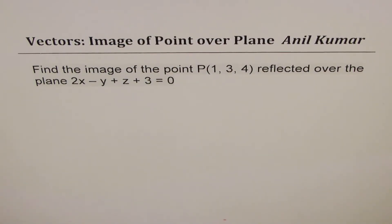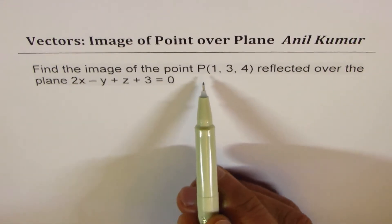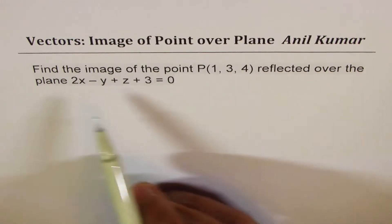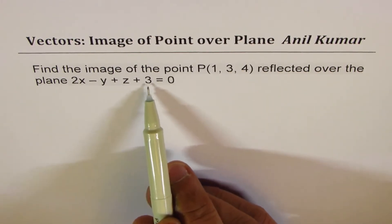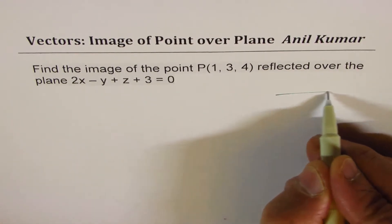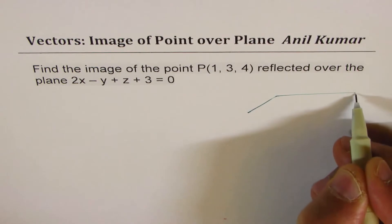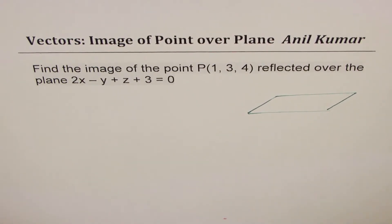I'm Anil Kumar sharing with you a test question on vectors. We'll try to find the coordinates of an image point over a plane. The question is: find the image of point P(1, 3, 4) reflected over the plane 2x minus y plus z plus 3 equals 0.